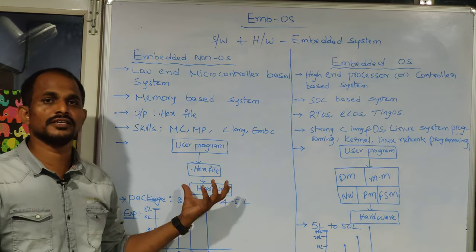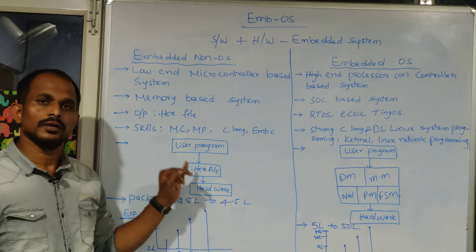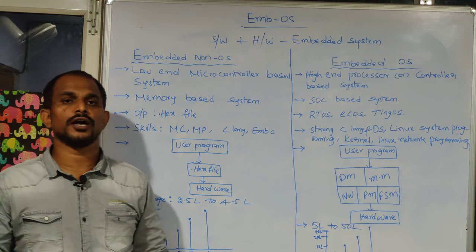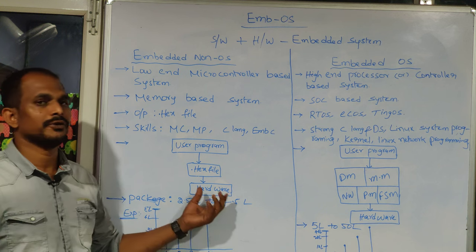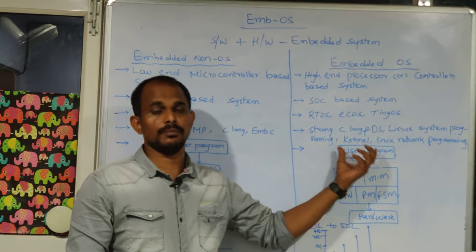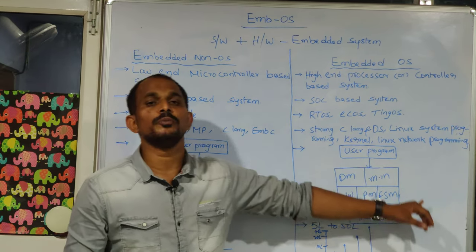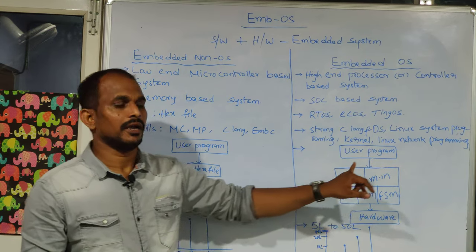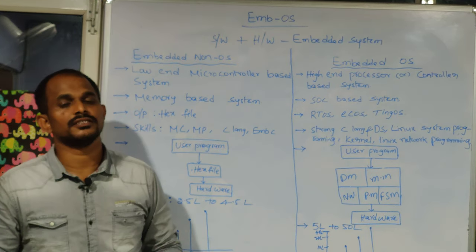At the non-OS level, whatever C program you write for your microcontroller, you create an equivalent .hex file and run it on your hardware. For example, to control a robot, simply write your embedded C program, create a .hex file, load it into the microcontroller, and the hardware starts working. At the OS level, you need to write multiple programs that manage many different sections inside the kernel: device management, memory management, process management, network management, and file system management.